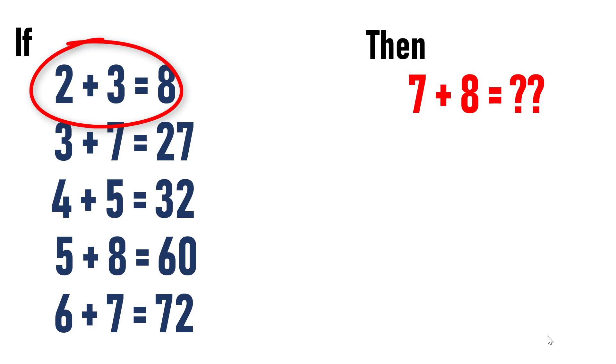Here the first equation is 2 plus 3 is equal to 8. So you cannot find or you cannot attain much information about this particular statement. So let's move on to the second statement. The second statement or equation is 3 plus 7 is equal to 27. So the best way to solve is first perform some basic math operations between numbers and check whether you could get some kind of clue.